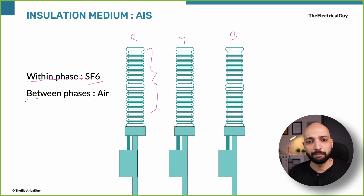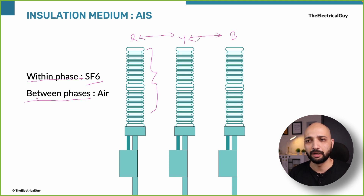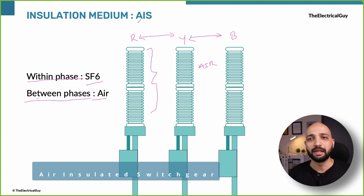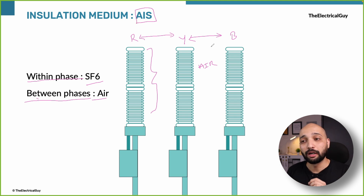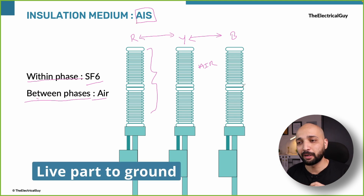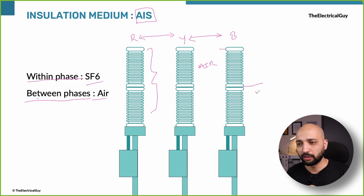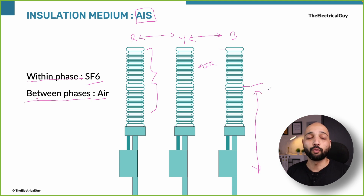The second concept is insulation between the phases — the insulation provided between two phases, such as between R and Y phase or Y and B phase. In the case of AIS switchgear, this insulation is provided by air, and hence the name is AIS or air insulated switchgear. The insulation between live part and ground is also provided by air.